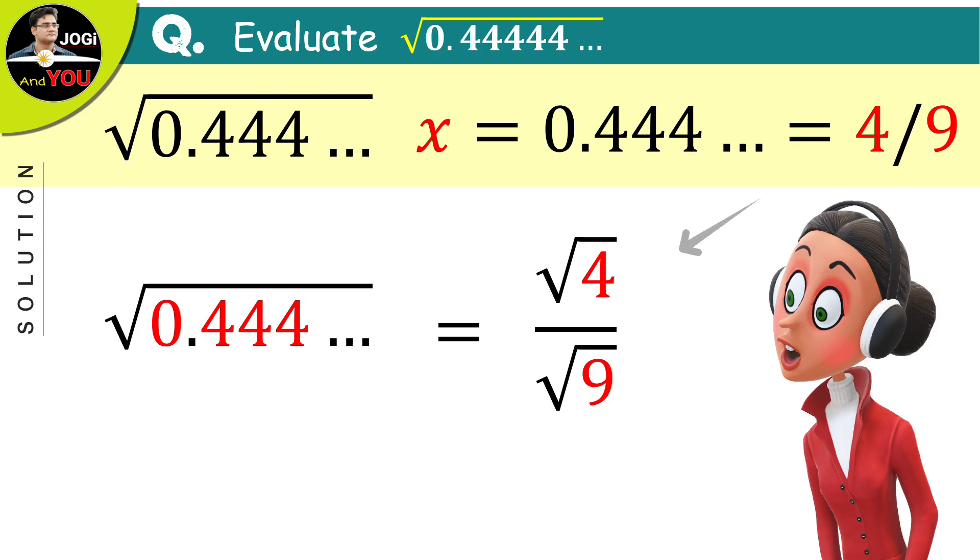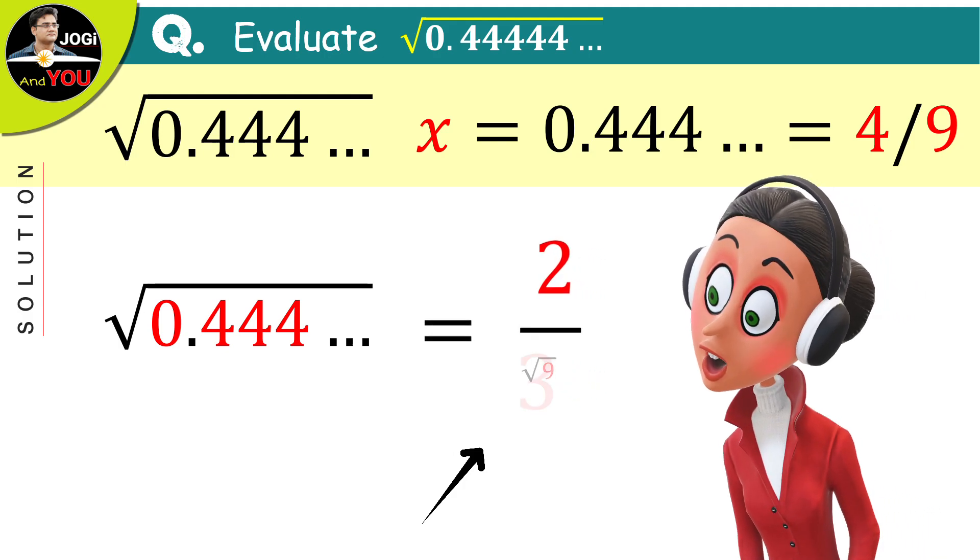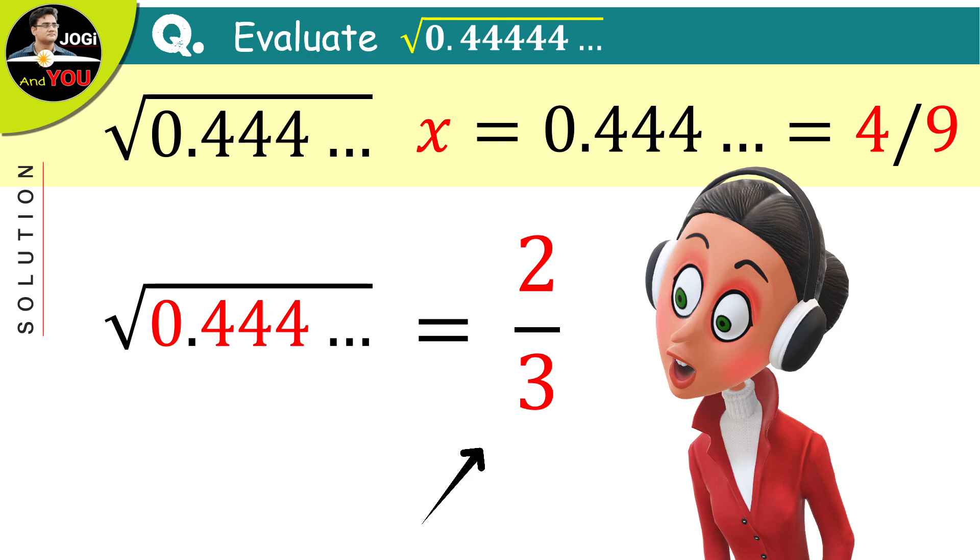Okay, in the numerator now, root 4 means 2 and similarly, in the denominator, the value of root 9 will be 3. And this is what we had to extract from the given problem.